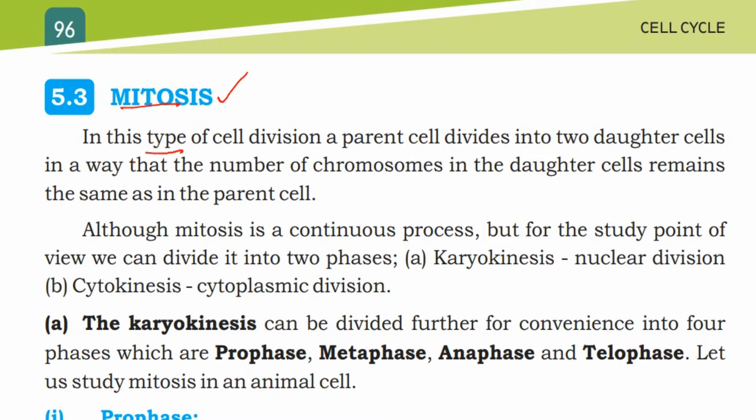In this type of cell division, a parent cell divides into two daughter cells such that the number of chromosomes in the daughter cells remains the same as in the parent cell. Although mitosis is a continuous process,